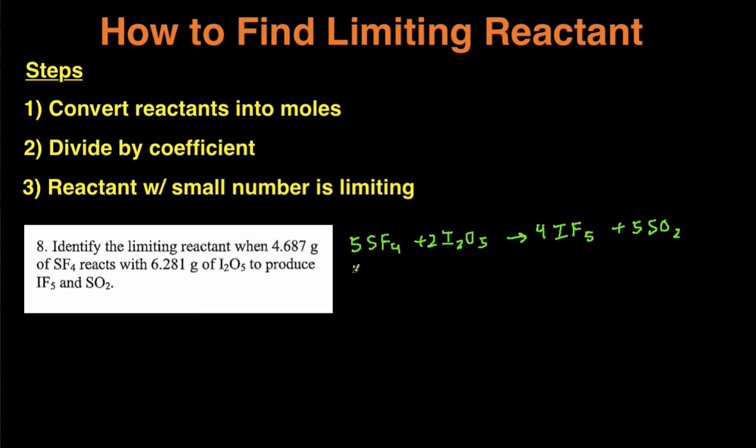So once you have a balanced chemical reaction, we have 4.687 grams of SF4 and 6.281 grams of I2O5.